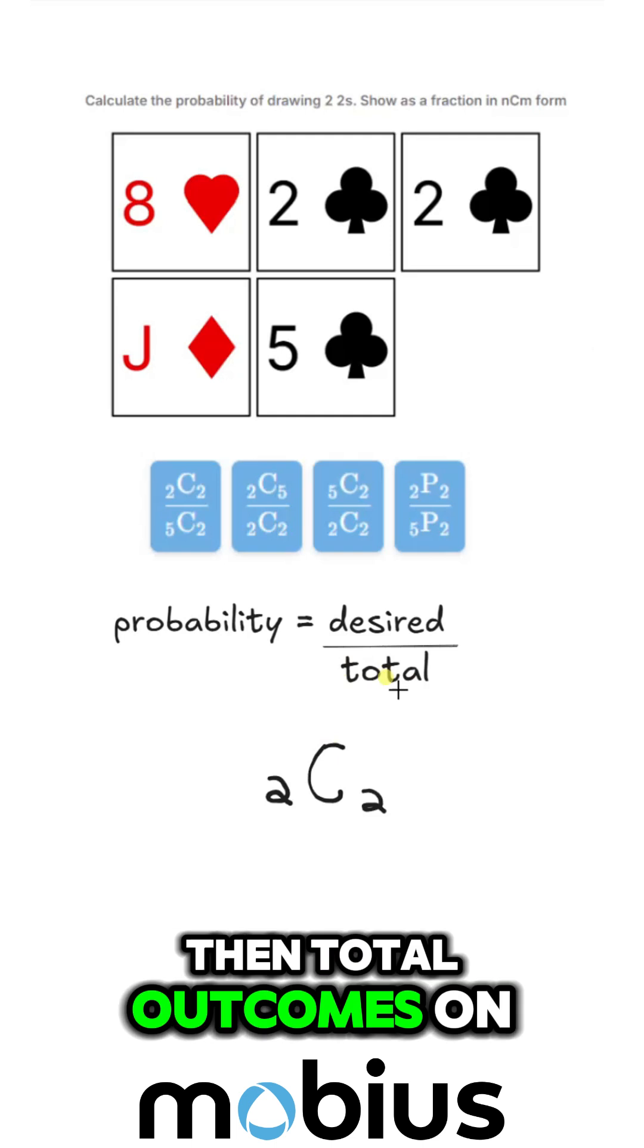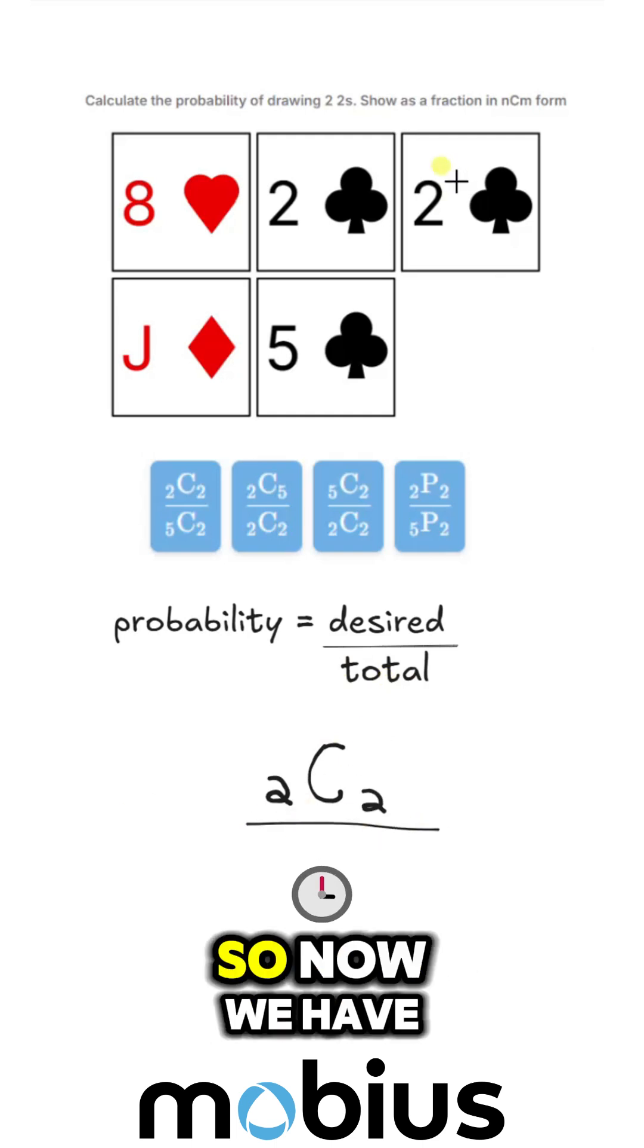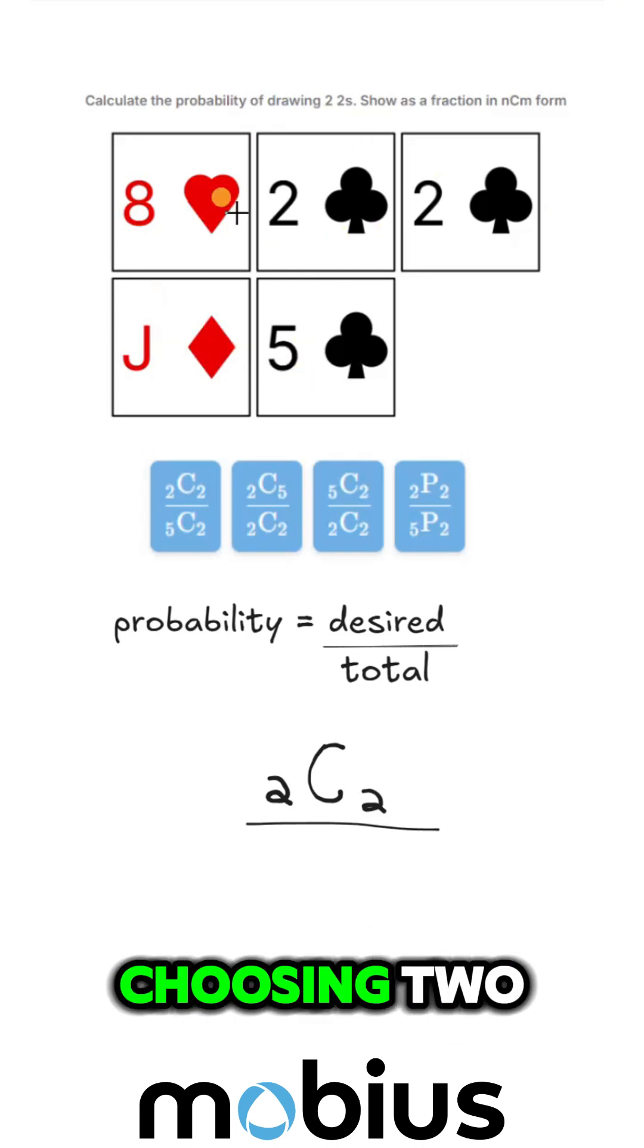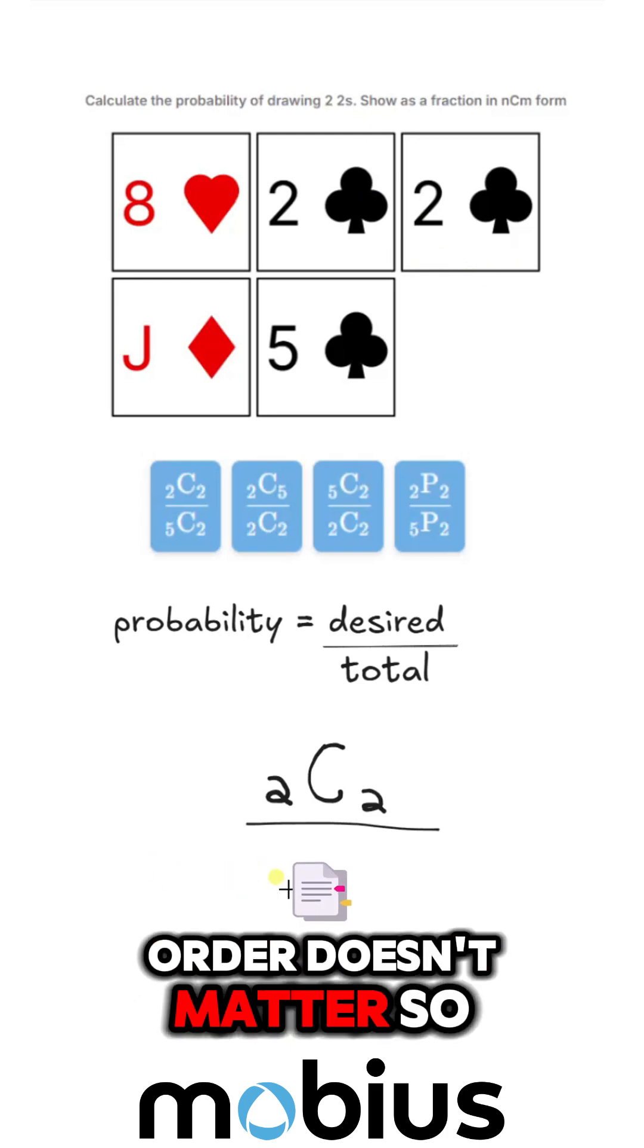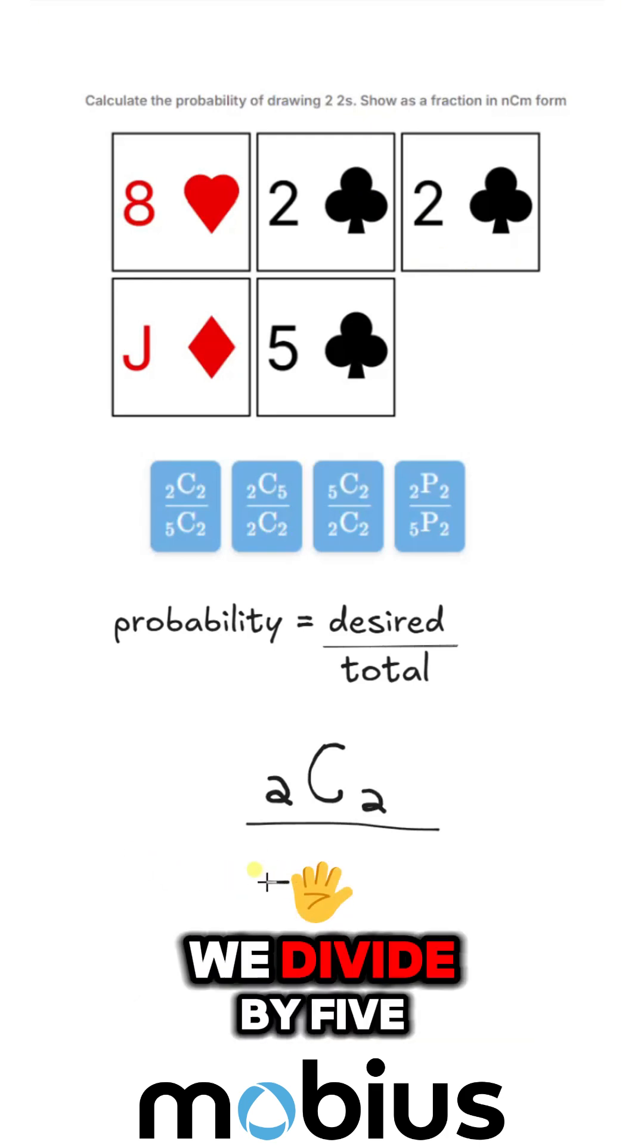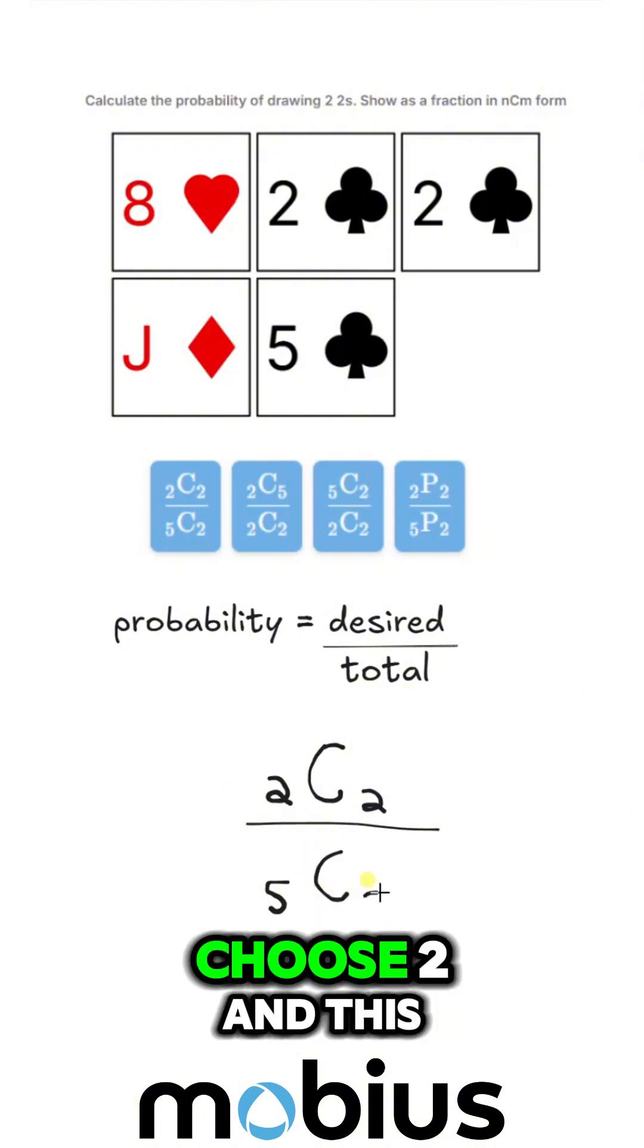Then total outcomes on the bottom, divide by that. So now we have five cards and we're choosing two. And because of the setup of the problem, order doesn't matter. So we divide by five choose two.